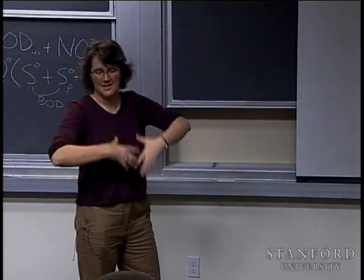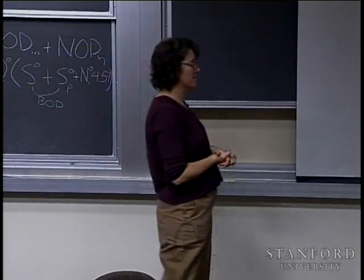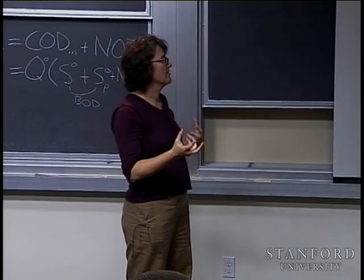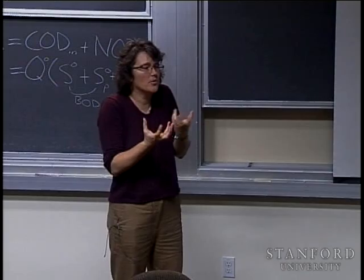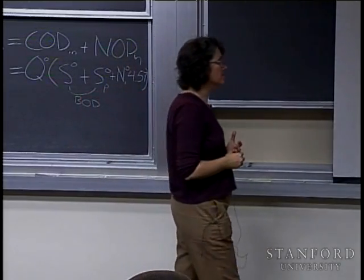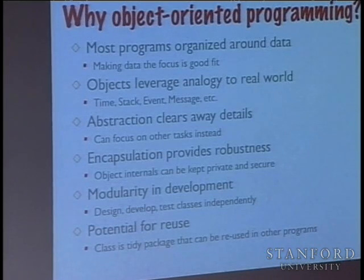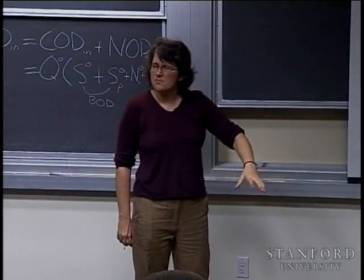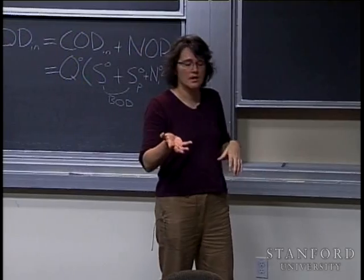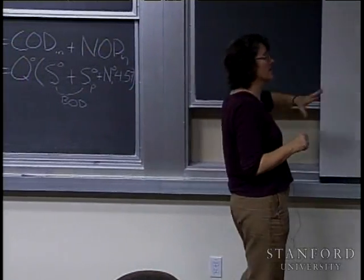This idea has permeated language design so that virtually every modern language has some facility for object orientation — even older languages like BASIC have been updated to support it. OOP leverages real-world meaning: when you talk about a time, a stack, or an event, those things have real-world analogs, so you already know a lot about what they do. Abstraction lets us use a stack just with push and pop, without worrying about where the memory comes from or what internal structures are used — it's a black box, and we're not mucking with the internals.